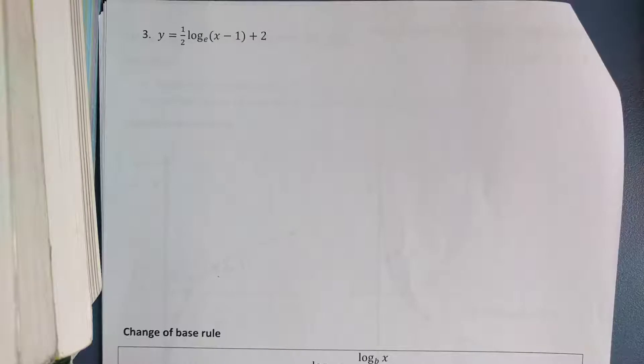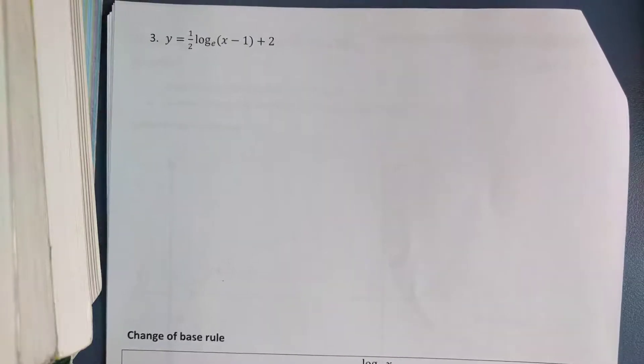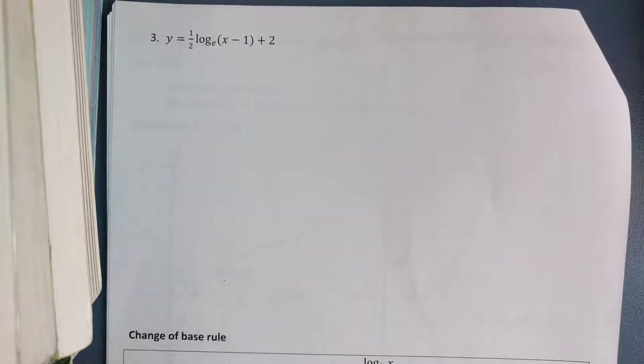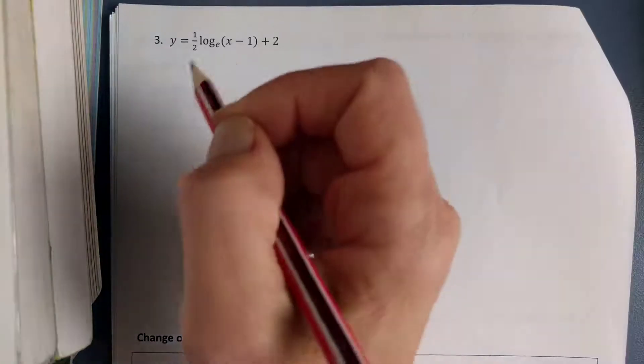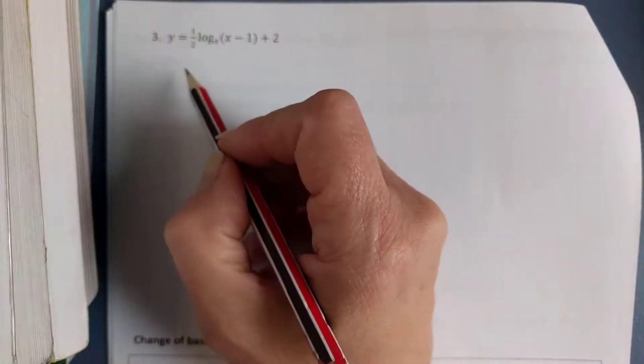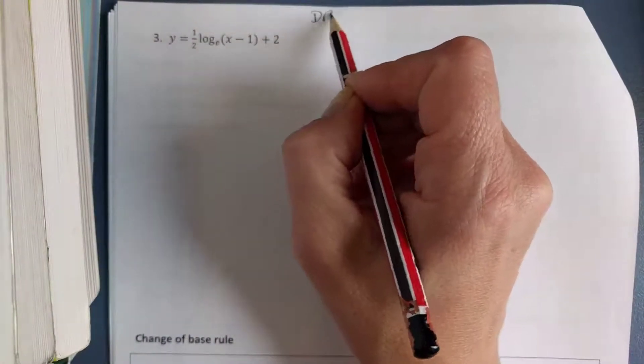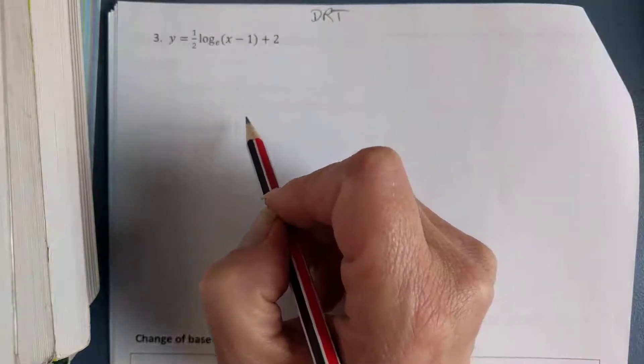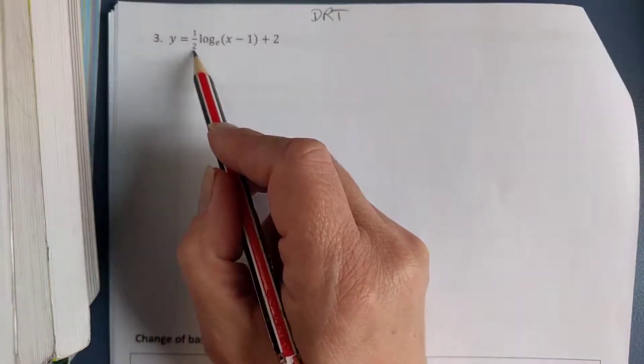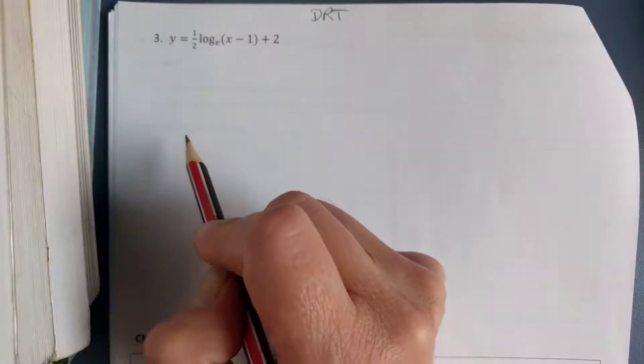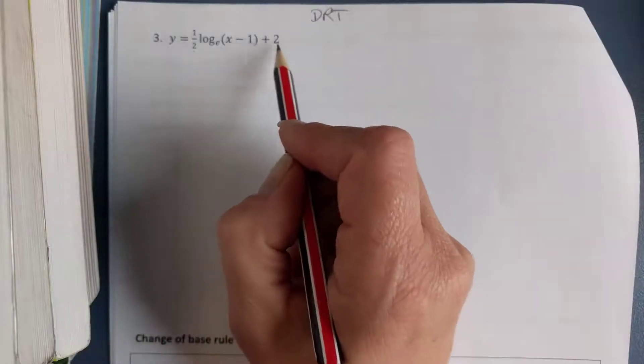So we've got y equals a half log e of x minus 1 plus 2. And what I'm going to do is I'm going to follow the same method that I did yesterday. I'm going to note down what my transformations are, and then I'm going to sketch by mapping my key points and my asymptote and finding any intercepts if I need to. So I'm going to start by going DRT: dilations, reflections, translations. And I can see there's a dilation here, there's no reflections, and there's translation here and here.